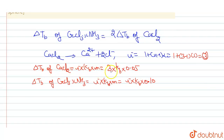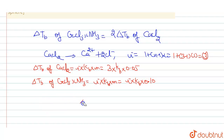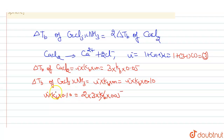So ΔTb of the complex = i × Kb × 0.10, and this equals 2 times ΔTb of CaCl₂, which is 3 × Kb × 0.05. Kb cancels from both sides. Therefore, the van't Hoff factor i for the complex equals 3.